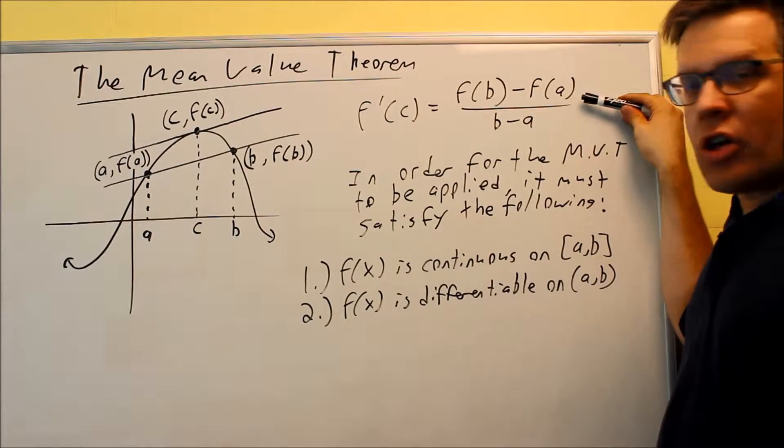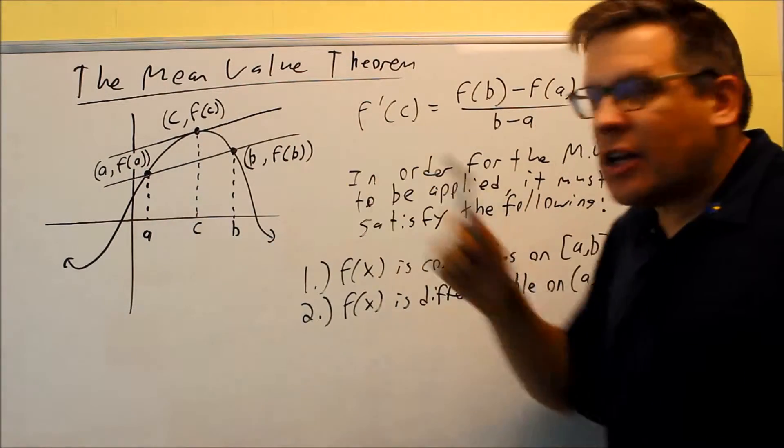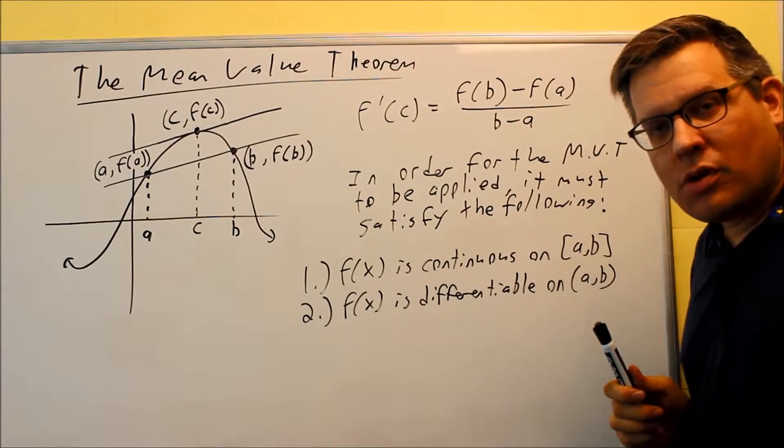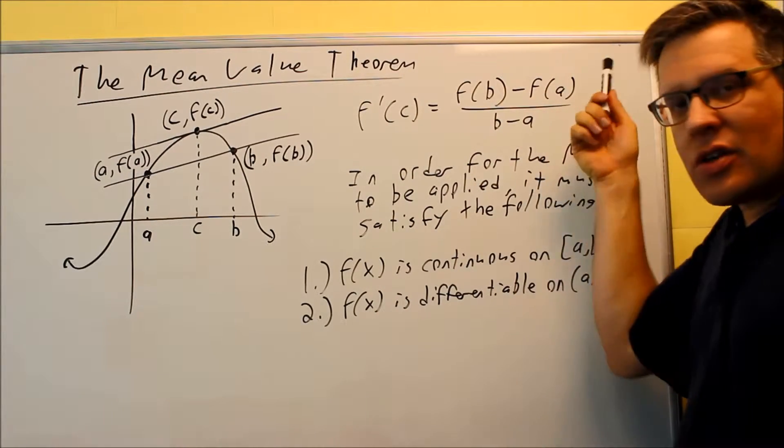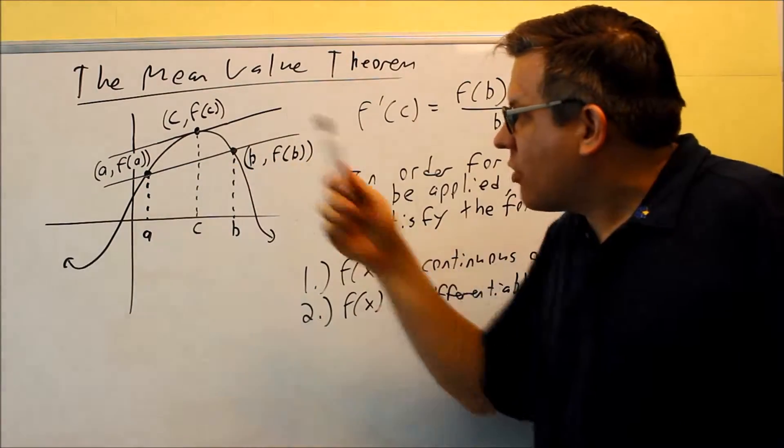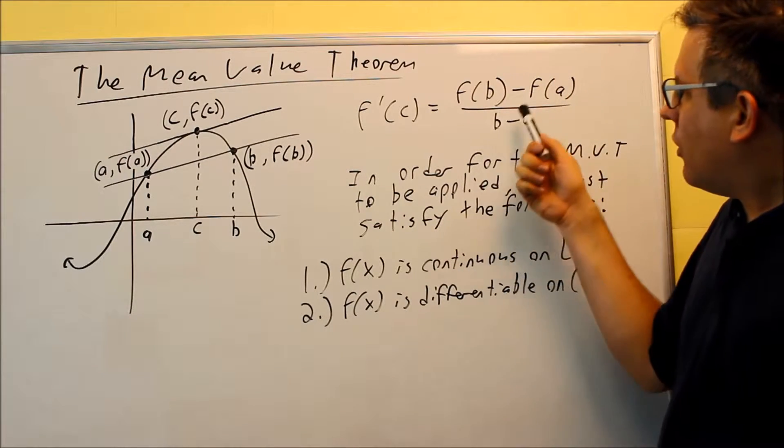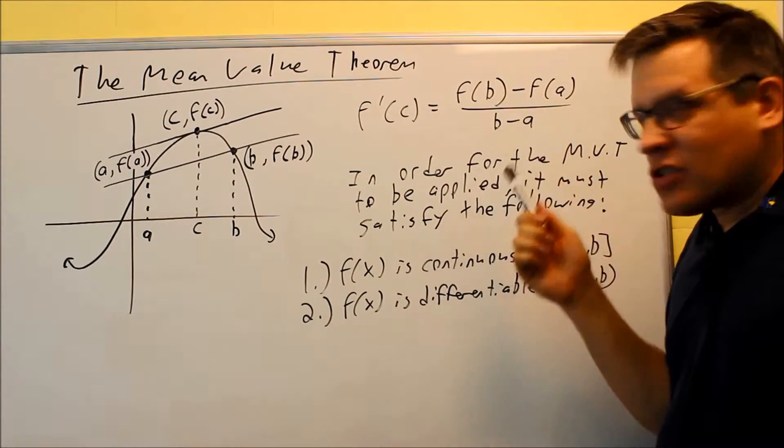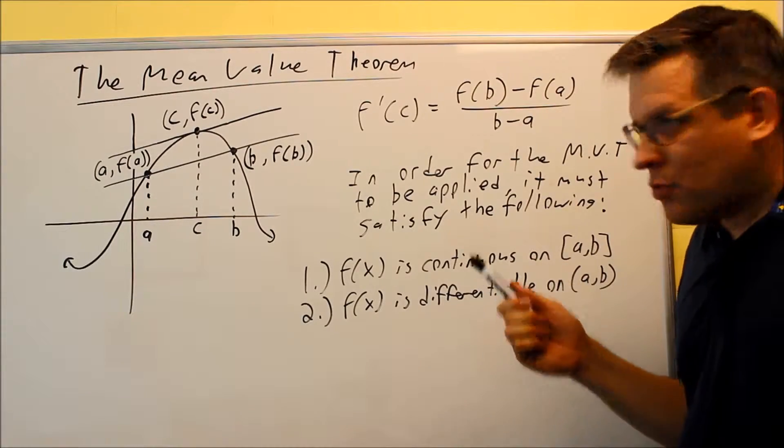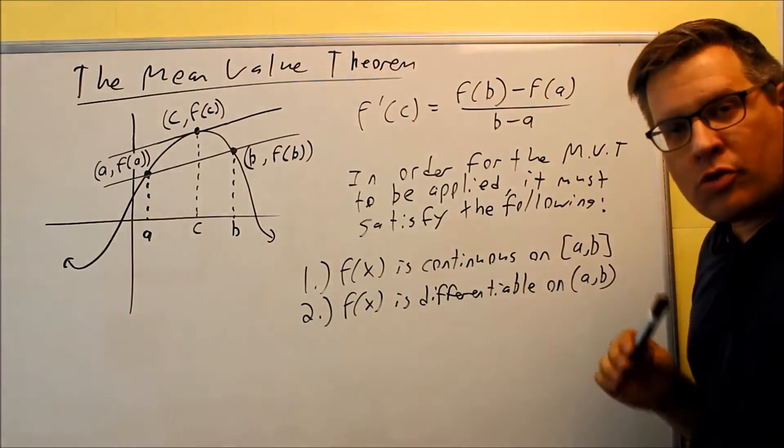So where does our formula come from? f'(c), that is the slope of the tangent line at C. Remember, the derivative means slope. What is this? This would be the way you could find the slope of a line passing through A and B. So I have a change in Y over a change in X. It's just a slope formula that you've seen before in algebra, same thing that we're applying here. These two slopes are equal to each other.